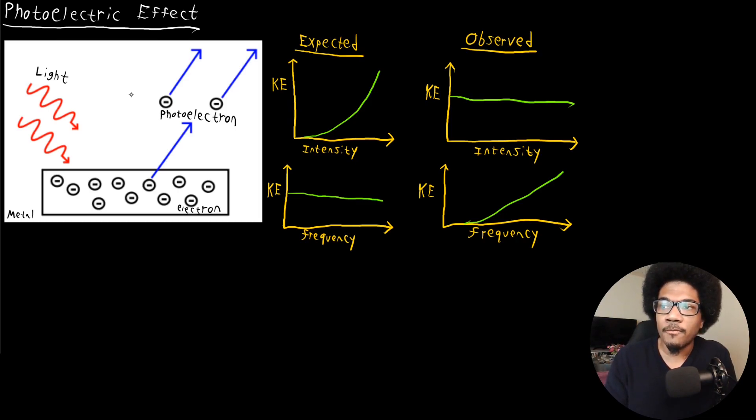The photoelectric effect is the phenomena where you shine light on a metal surface. What I have here are these red squigglies. This is incoming electromagnetic radiation, some form of light. And this is a metal surface that's rich with electrons.